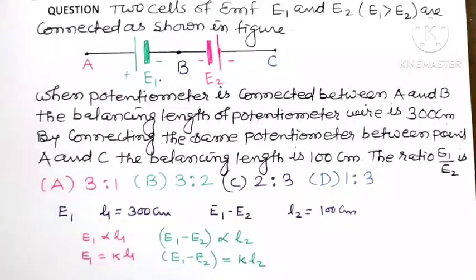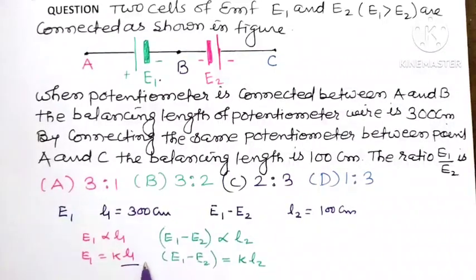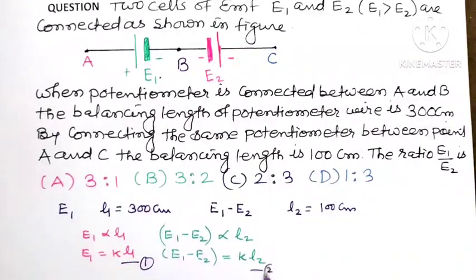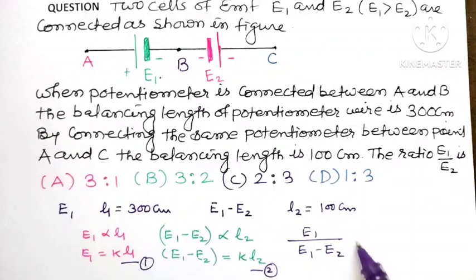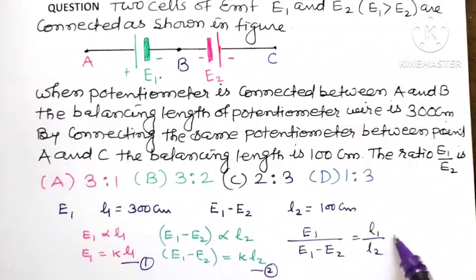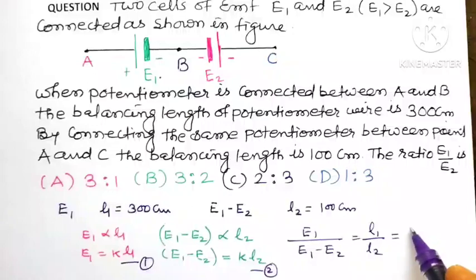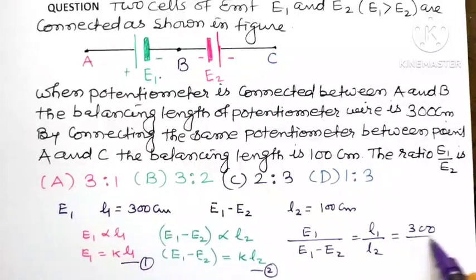Here K represents the potential gradient of the potentiometer wire. Now take the ratio of equation 1 with equation 2. We get E1 divided by (E1 minus E2) is equal to L1 divided by L2, which is 300 divided by 100.